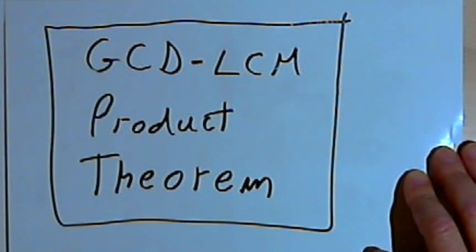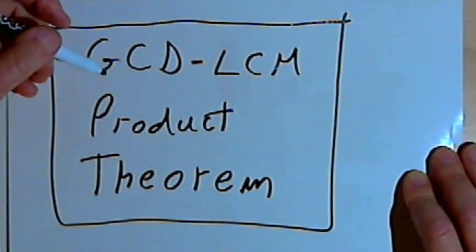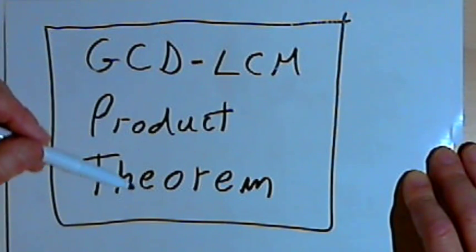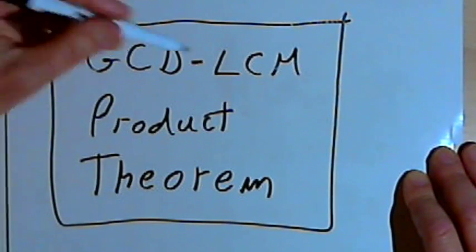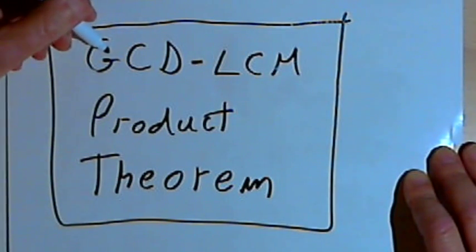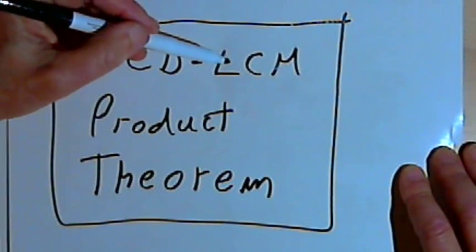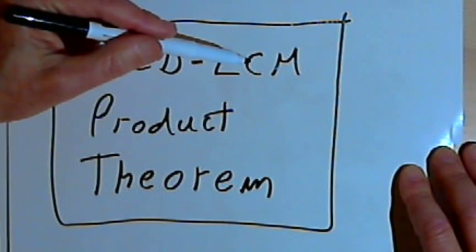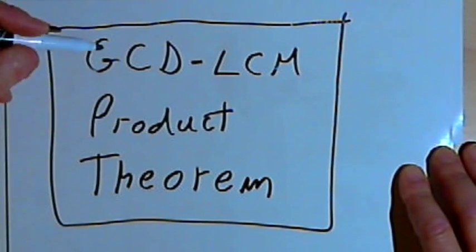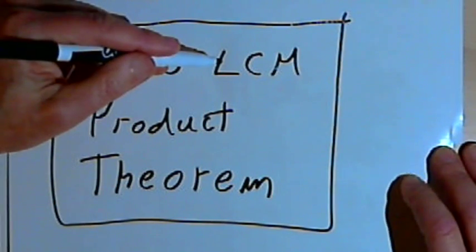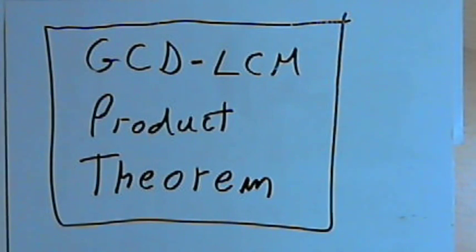This video is provided as supplementary material for courses taught at Howard Community College. In this video I want to talk about the GCD-LCM product theorem. GCD is the greatest common divisor, or greatest common factor, of two numbers. LCM is the least common multiple of two numbers. There's a theorem that shows the relationship between the greatest common divisor and the least common multiple. Let's find out what that theorem is and then see how we use it.